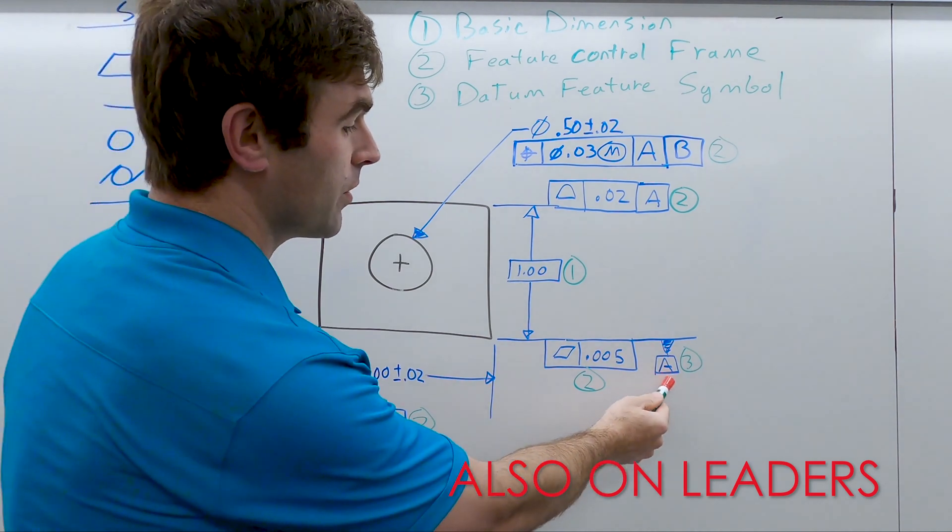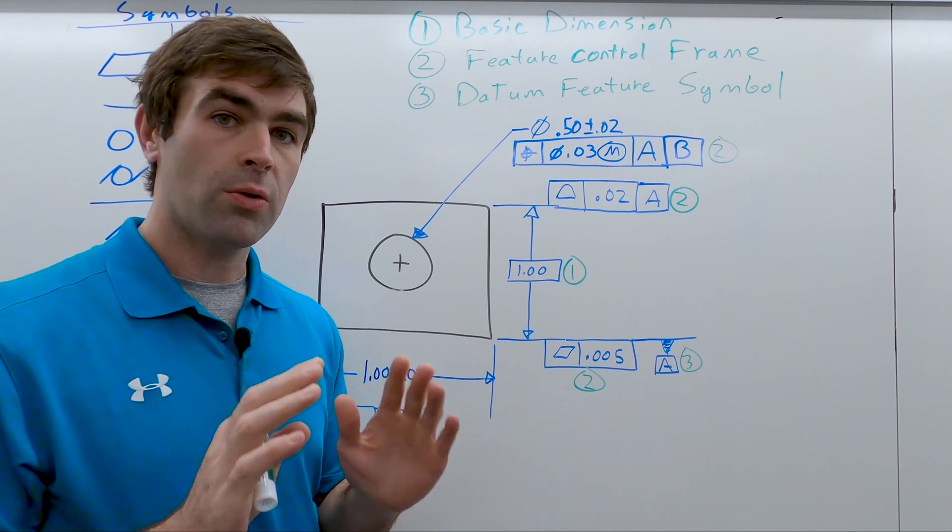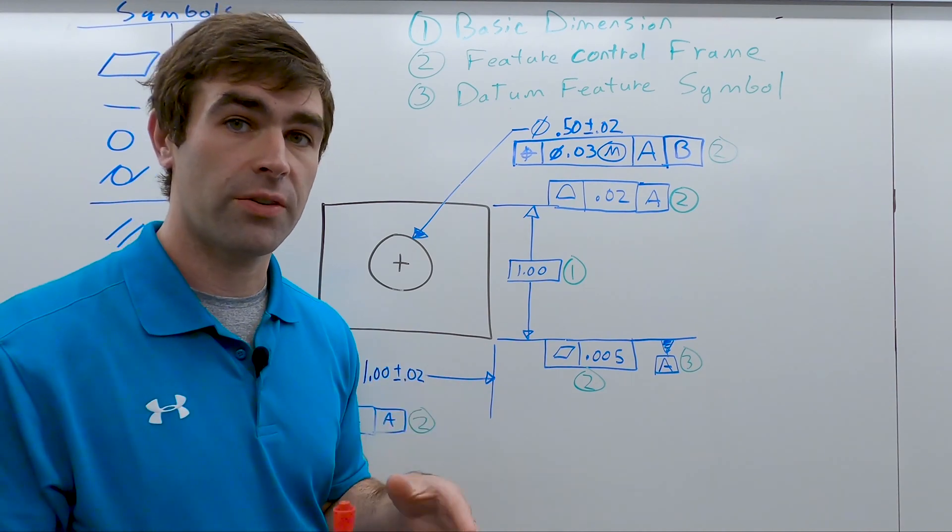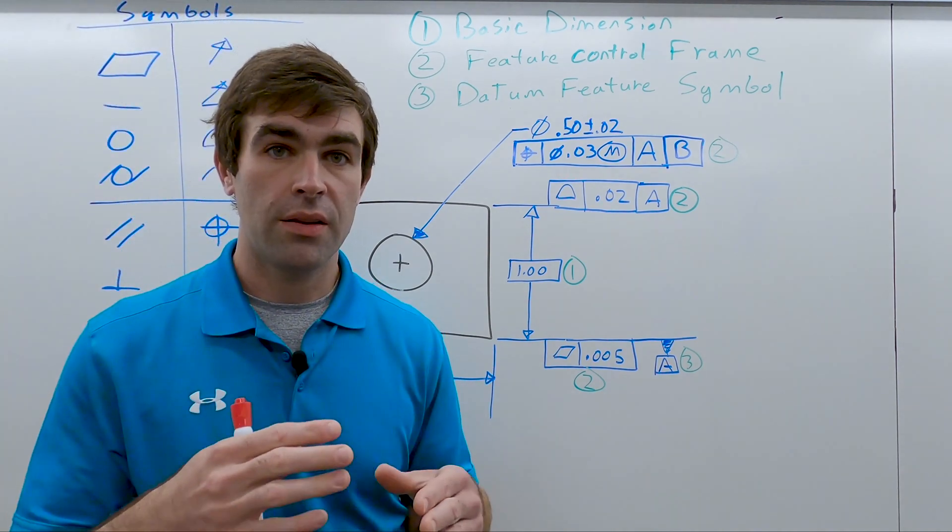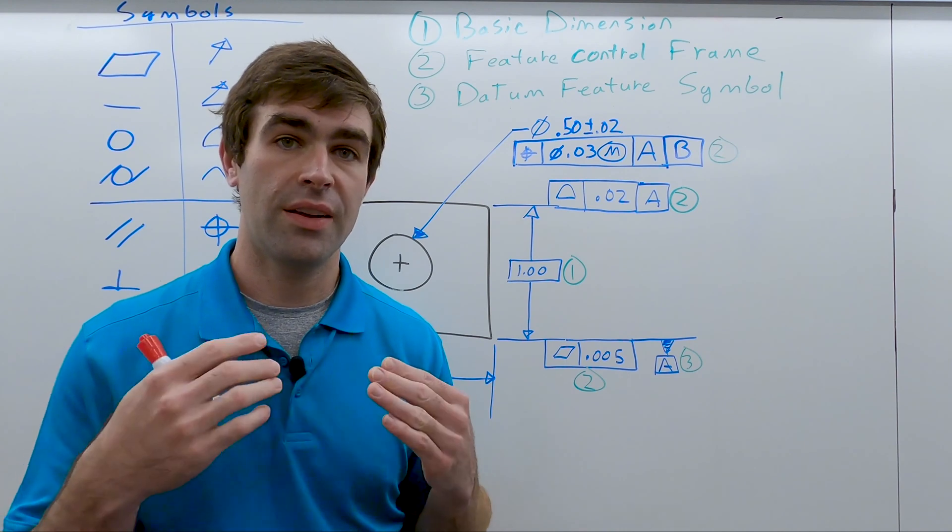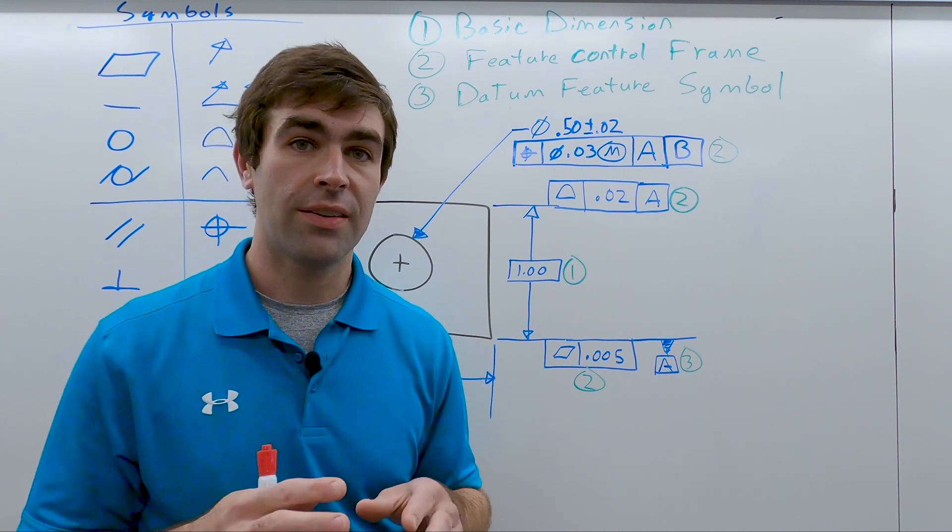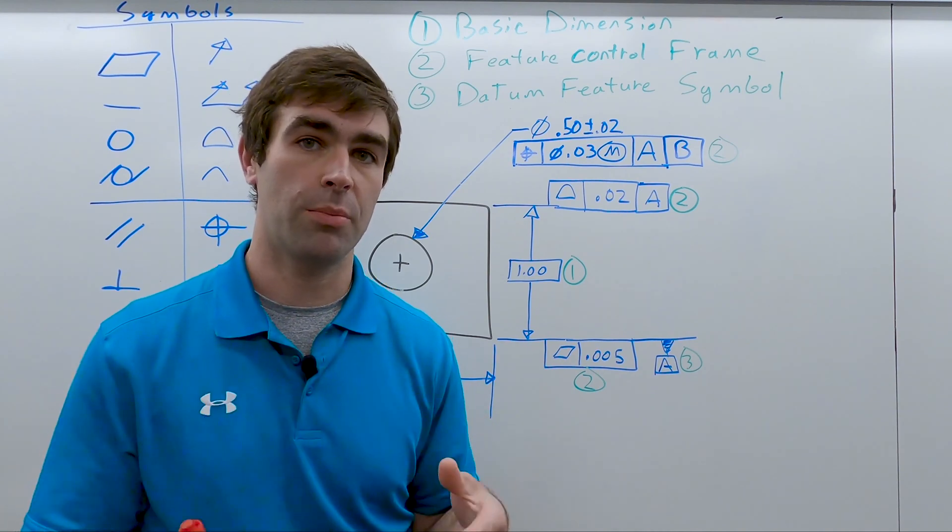The datum feature symbol indicates which physical portions of the part are going to serve as datum features. The datum features are going to simulate the actual datums. Datums are theoretical entities. They have to be developed by datum feature simulators.